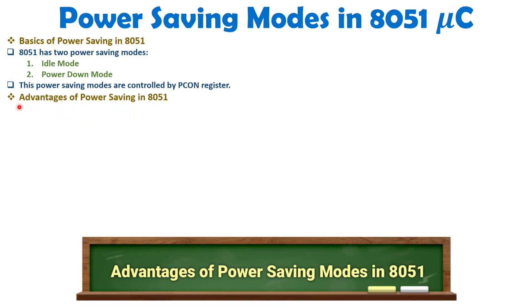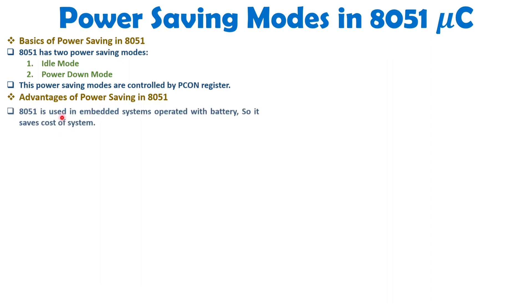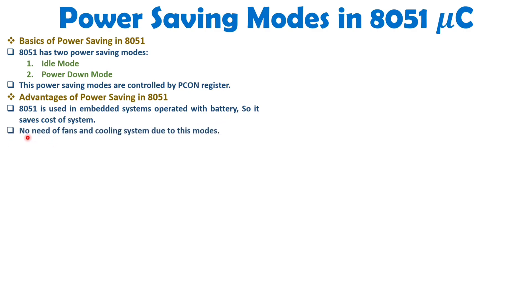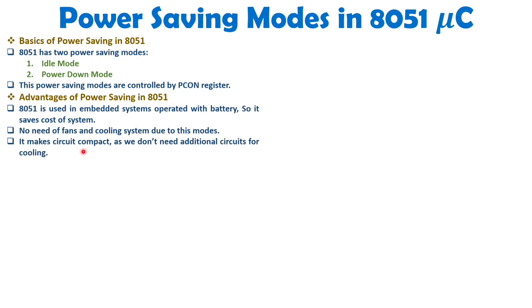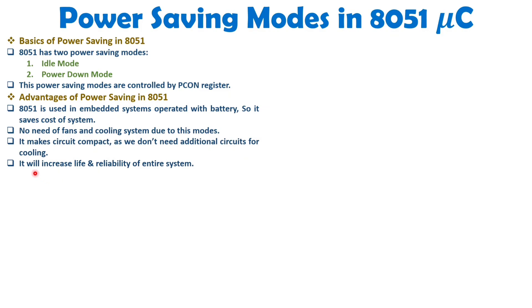The advantages of power saving in 8051: since the controller is used in embedded systems operated with respect to battery, saving power saves battery life and therefore cost. With power saving you don't need extra circuits for fans and cooling systems, making your system compact. By power saving you will be increasing the life and reliability of the device.